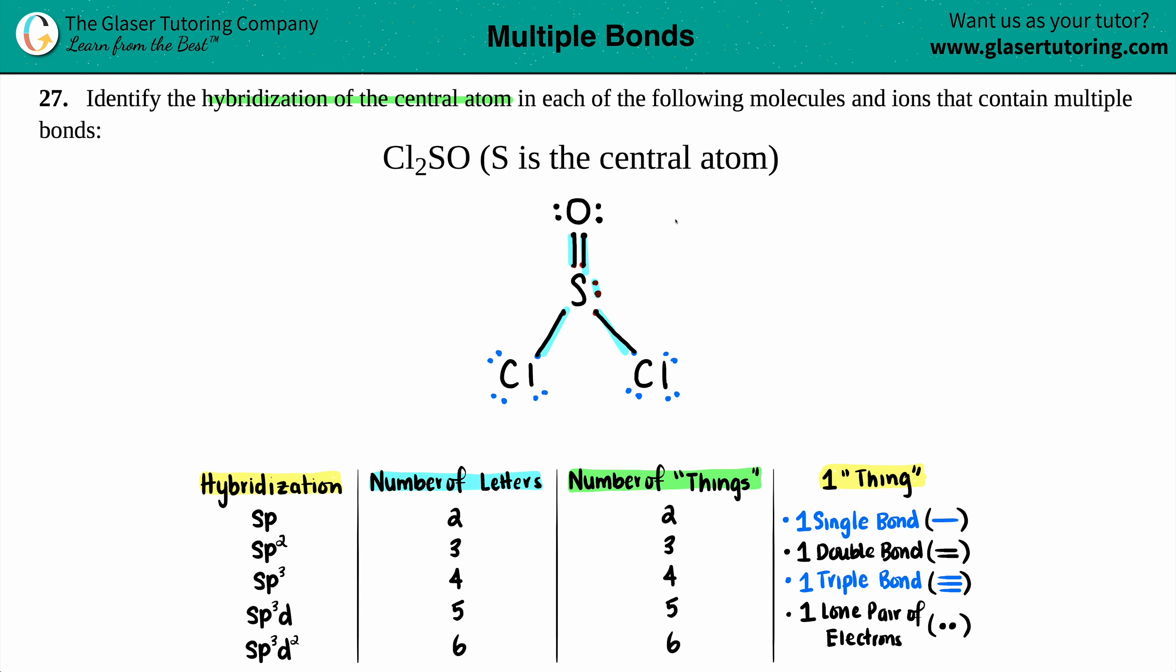That's all good because sulfur can have an expanded octet. It has access to d orbitals. It can have a max of 12 electrons if it's the center atom. If it's not the center, it can't have the 12—it has to have the octet. But anyway, now since we have the Lewis structure, let's figure out what that hybridization is.